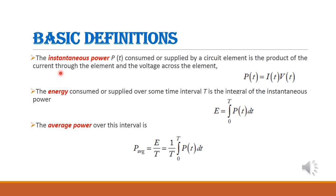Instantaneous power, energy, and average power. Instantaneous power means it is the product of current through the element and voltage across the element. It is given by P(t) = I(t) × V(t). Here P is the power, I is the current, and V is the voltage.